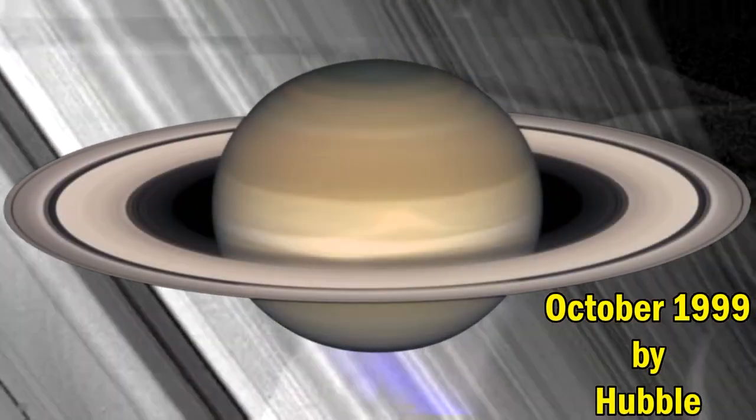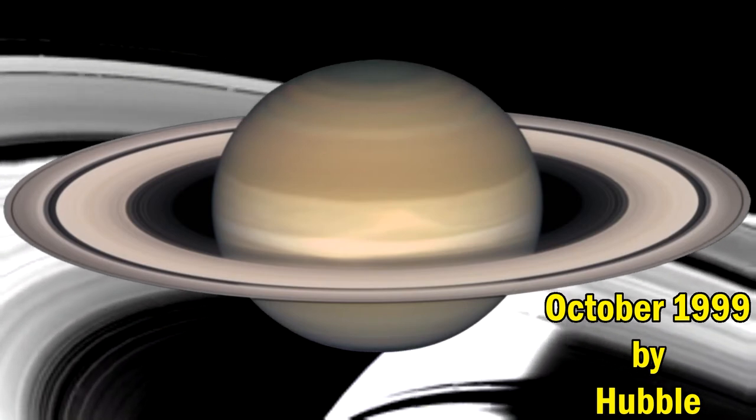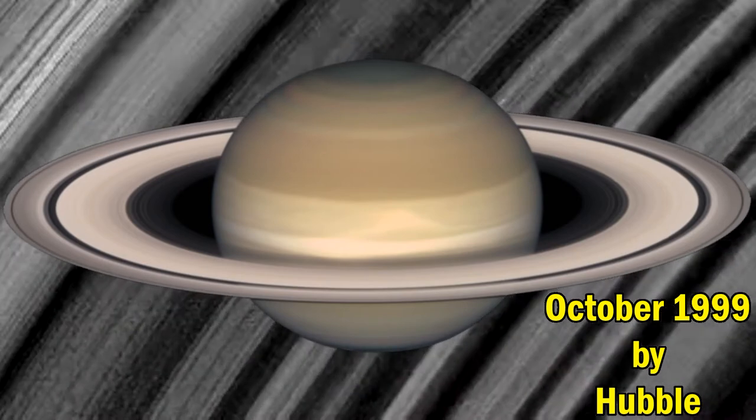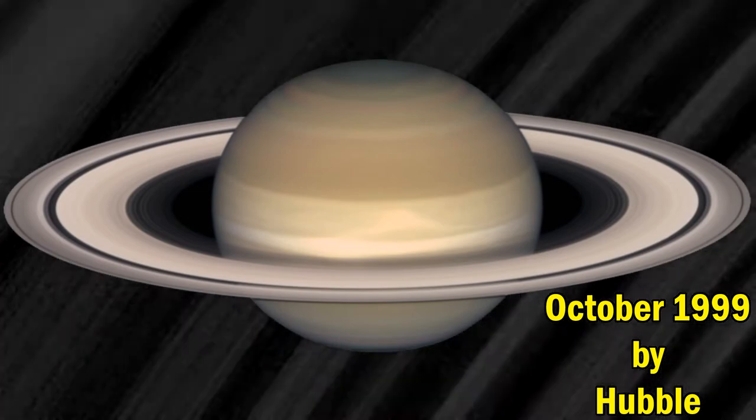Here is the photo of Saturn with its beautiful rings that we use. This image was taken in 1999 by the Hubble Space Telescope.